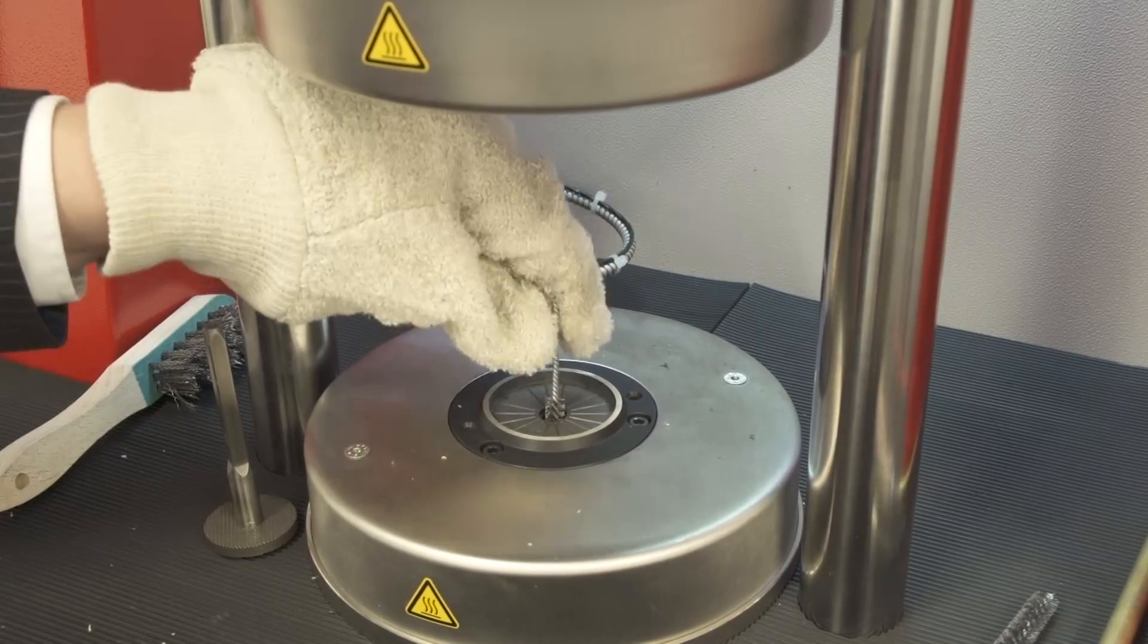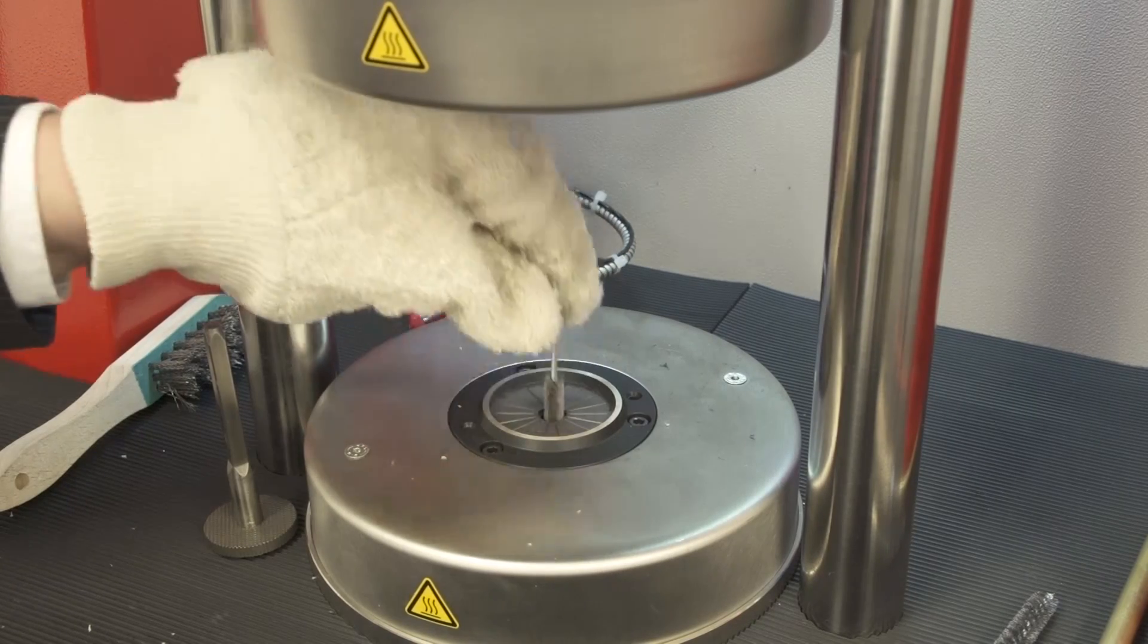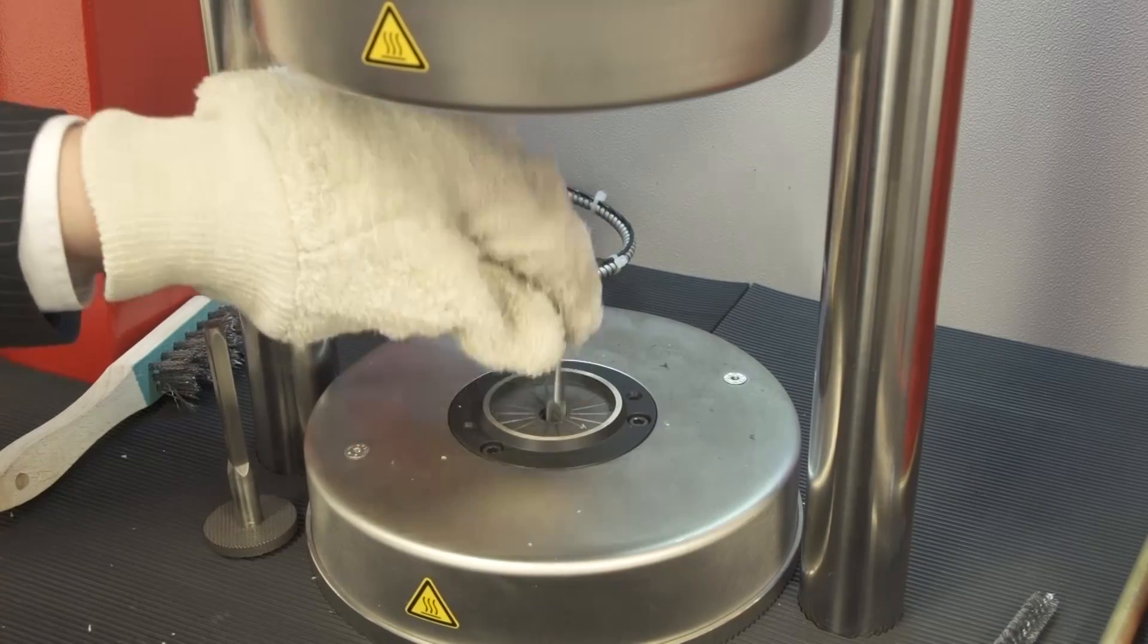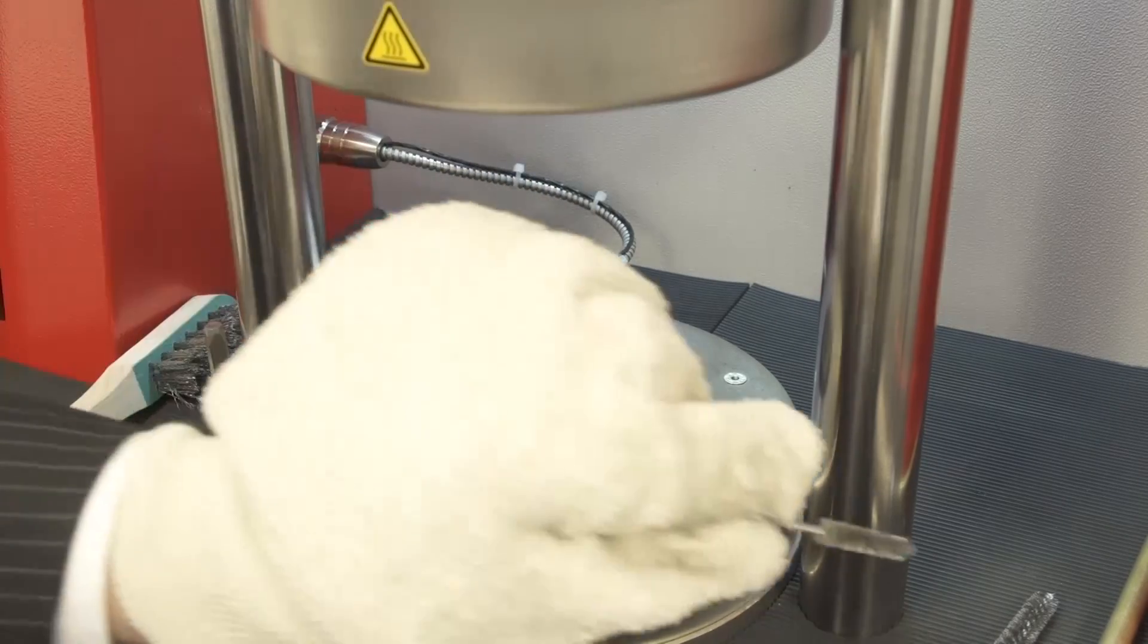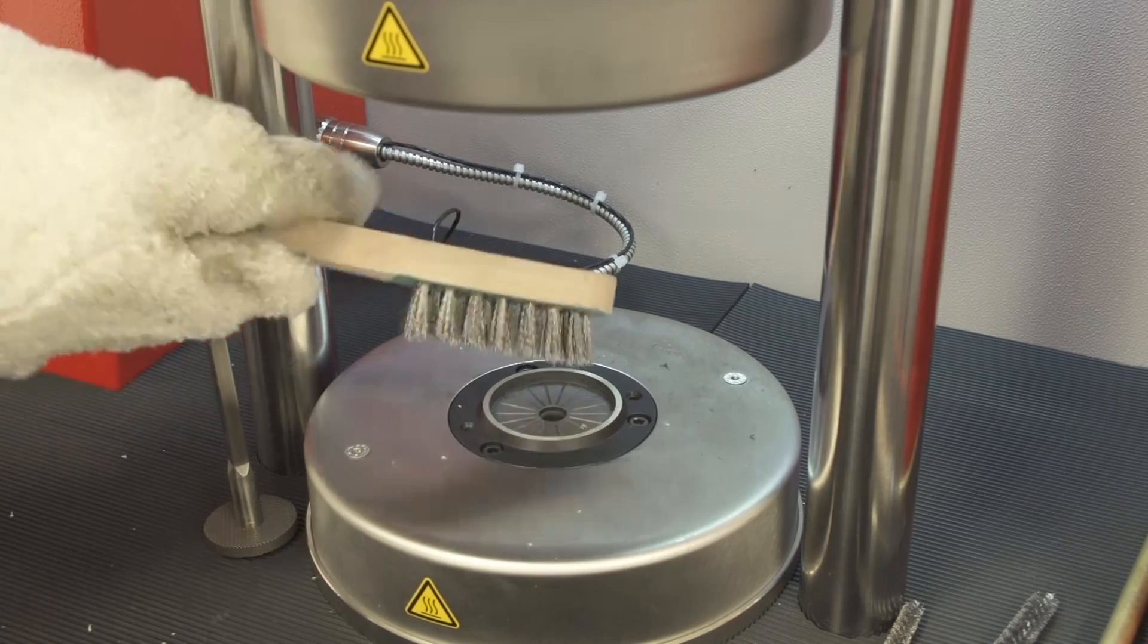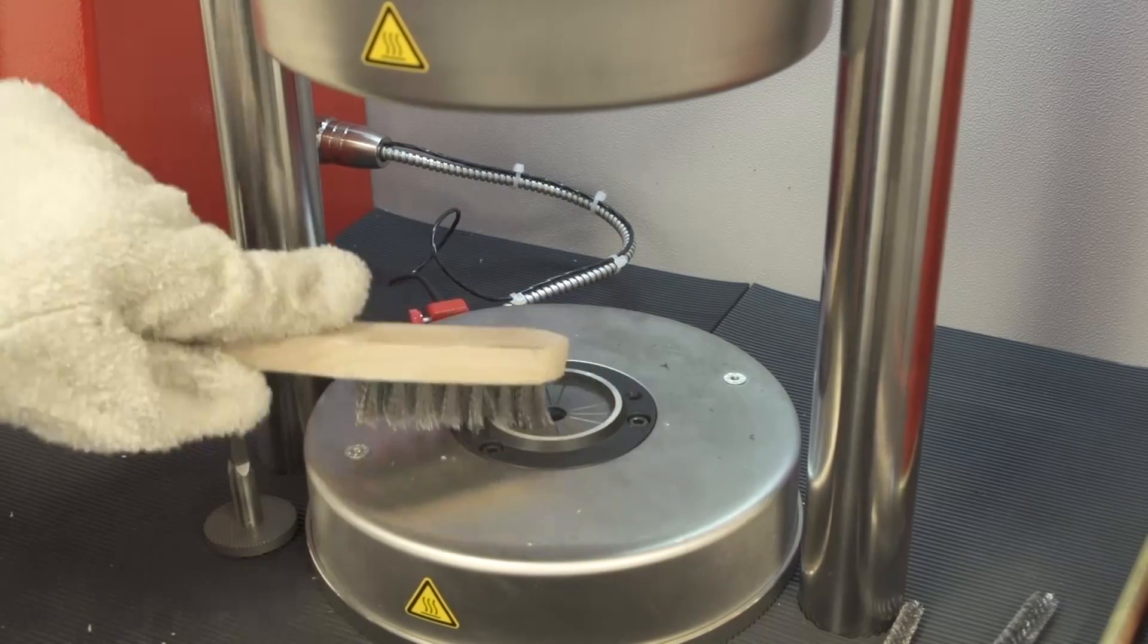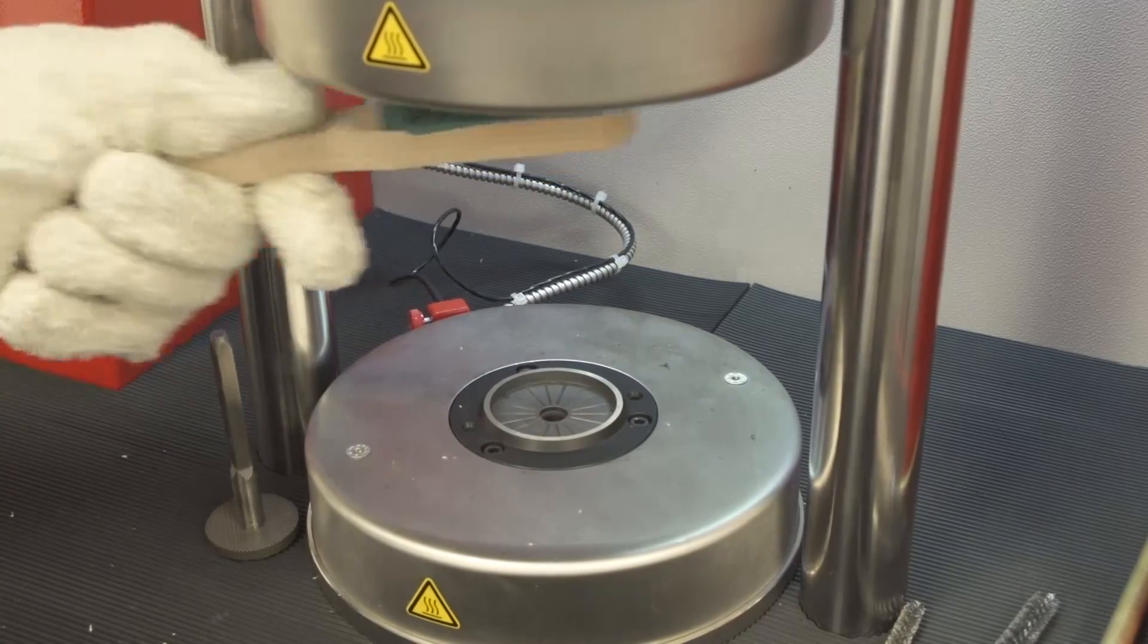Always wear heat protection gloves as the dies are heated. Also, use the provided stainless steel wire brush to remove any material residue from the lower as well as the upper die.